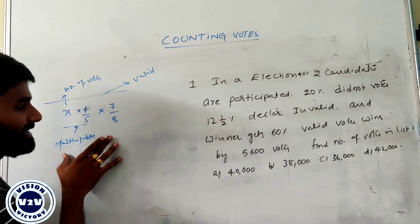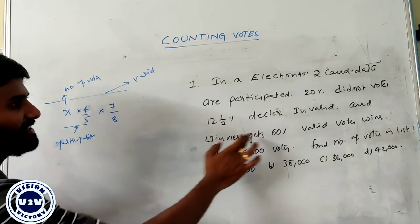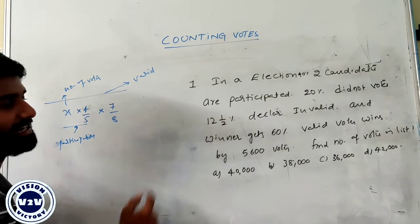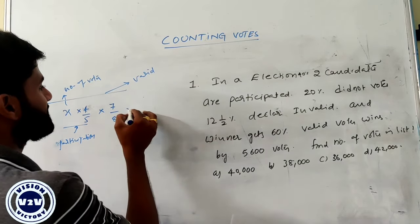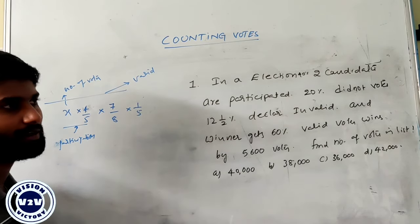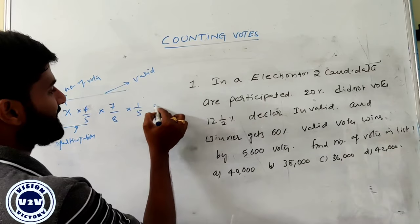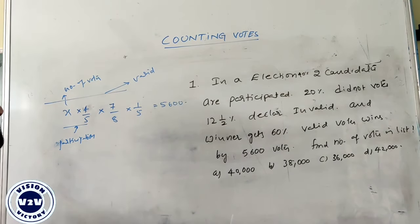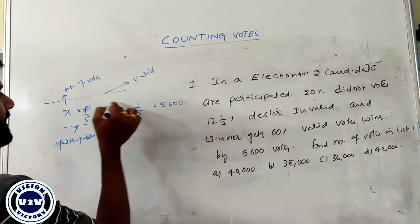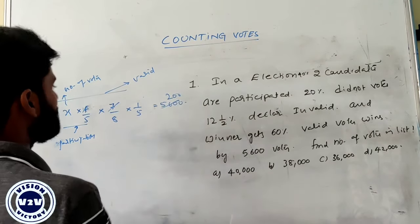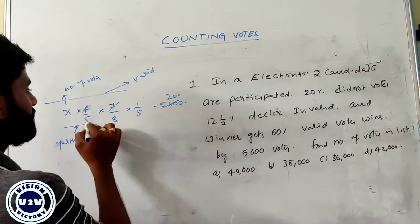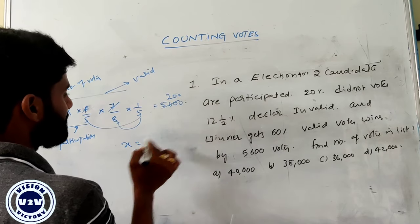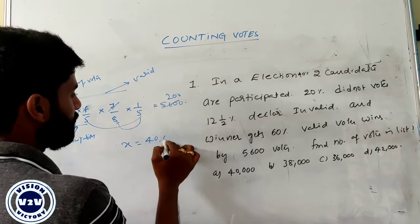These votes are distributed between winner and loser. Winner gets 60 percentage, loser gets 40 percentage, and winner wins by 20 percentage, which is 1 fifth of the number of votes, and these votes exactly equal to 5,600. Find the number of votes in the voting list. After calculation: 7 fours are 28, 28, 200, this is the value 200. Then 5 fives are 25, 25 eights are 200, 200 into 200. The total number of votes in the list is equal to 40,000.